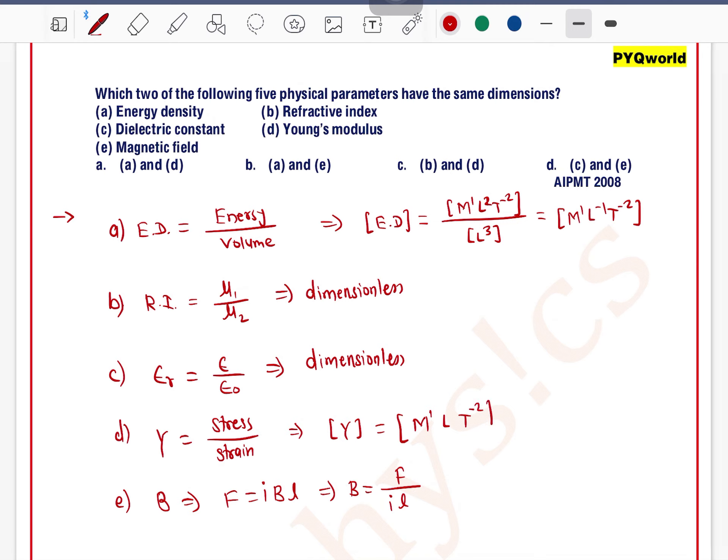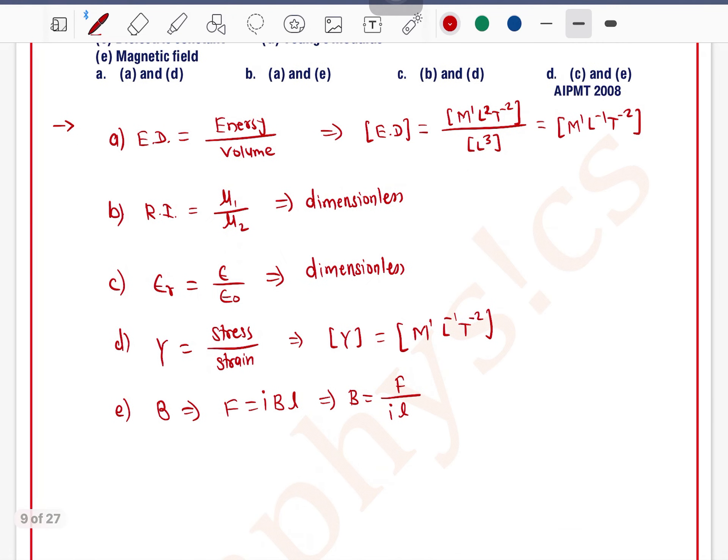Dimension of B: B equals dimension of force upon current into length. This will be M1 L1 T minus 2 divided by current and length, so length will be zero and current will be I to the power minus 1.